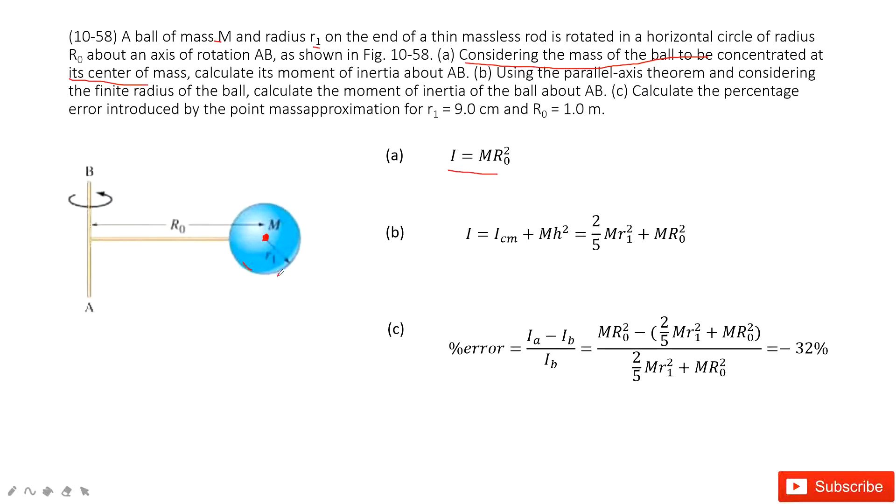we need to consider the moment of inertia for this ball about its center of mass. This is I_CM. The distance from the rotation axis to the center of mass is R0. So the first part is the moment of inertia for this ball.